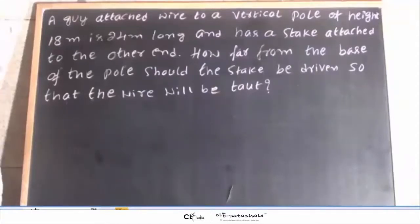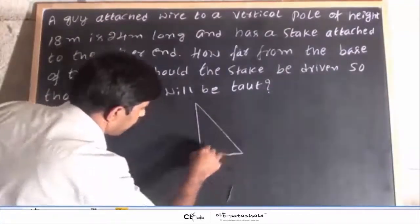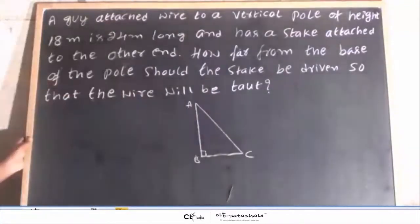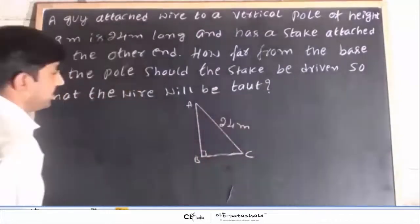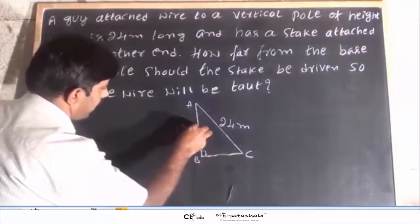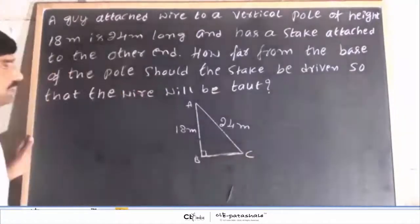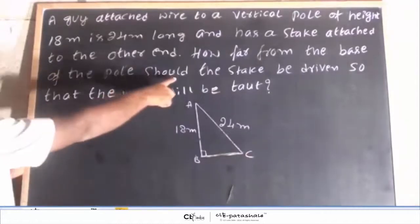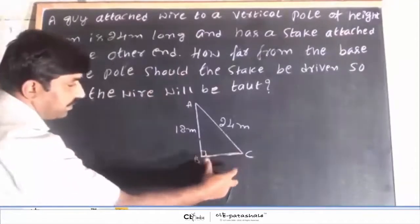First read the question carefully. Now the diagram ABC is the right angle triangle. Here length of the hypotenuse is given 24 meter and perpendicular height is given 18 meter. Now we have to calculate length of BC. Length of BC is the stake we drive so that the wire will be taut.